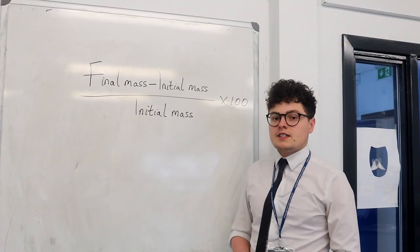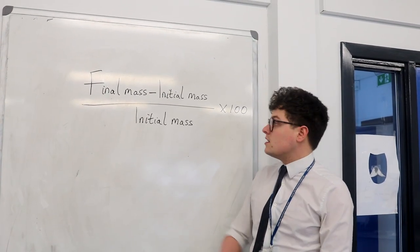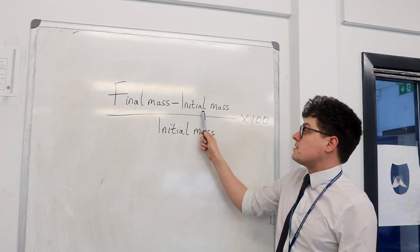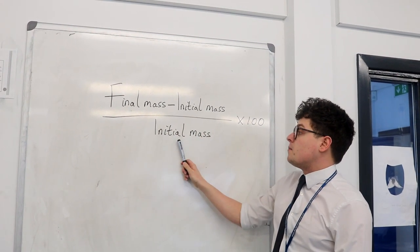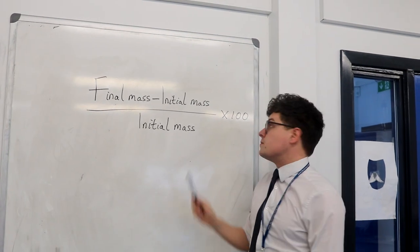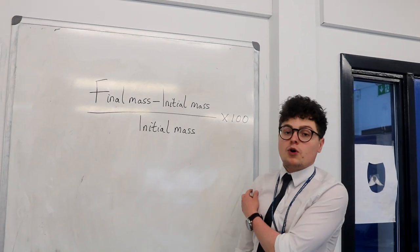Next, you must calculate the percentage change in mass. This may be an increase or a decrease. To calculate the percentage change in mass, you need to do the final mass minus the initial mass, and divide this number by the initial mass. To work it out as a percentage, you must then multiply this value by 100.